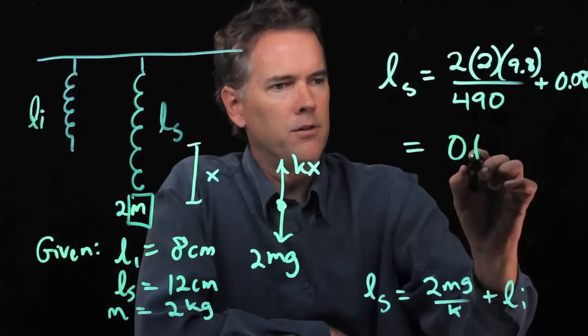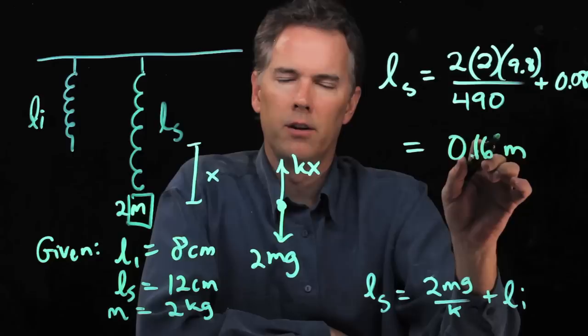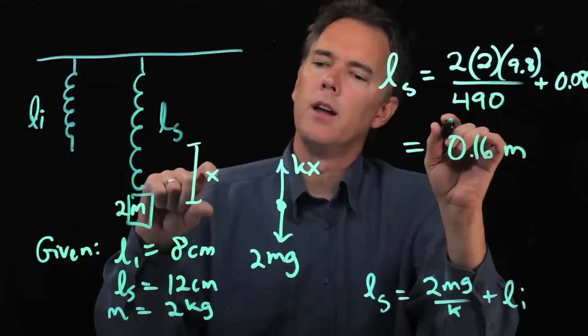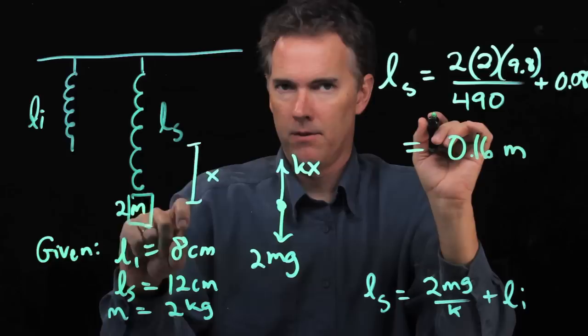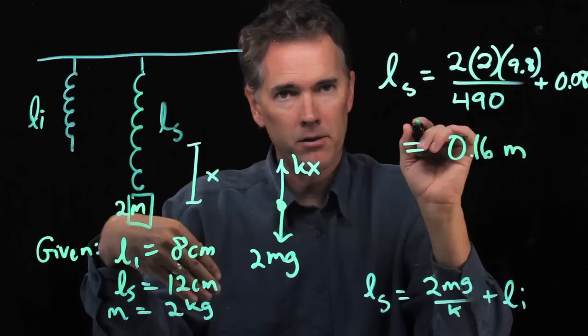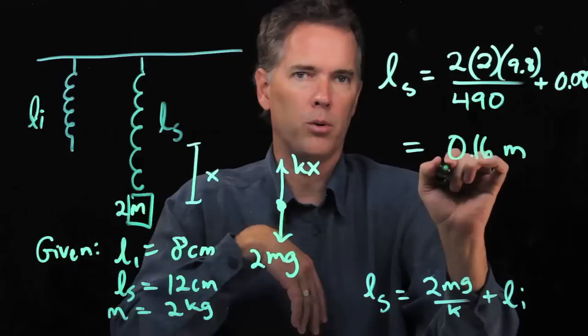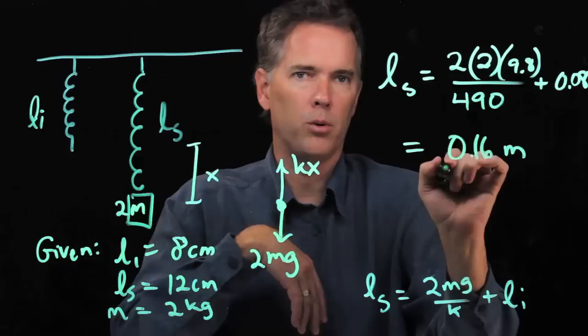I got 0.16 and the units are of course meters. You probably could have figured this out already, because 8 stretched to 12 with 1 mass on it—that's a difference of 4 cm. How far is it going to stretch with 2 of those masses on it? Another 4 cm, which would be 16 cm or 0.16 m. Alright, hopefully that's clear. Cheers.